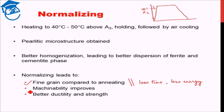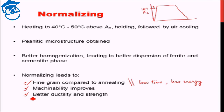In addition, normalizing provides good machinability and better ductility and strength to the final material. So normalizing and full annealing are parallel processes — the only difference is basically the cooling rate.